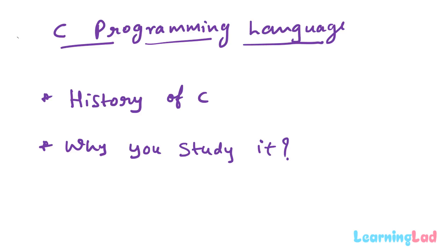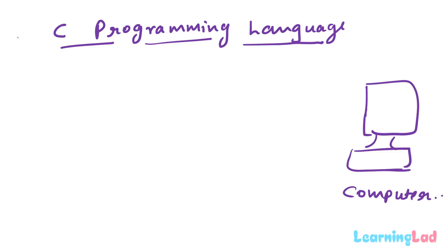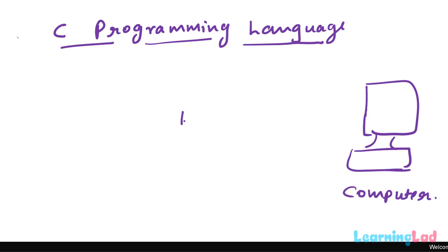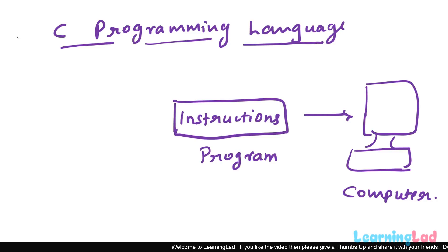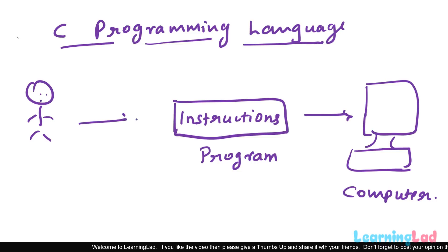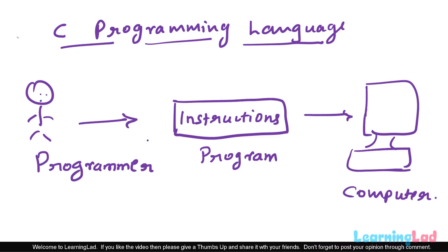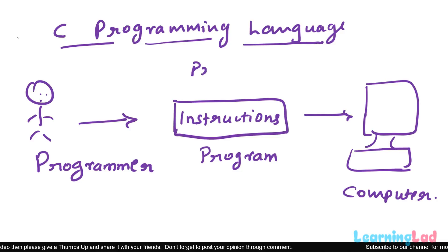First, let us see what is a programming language. We all know that a computer is a general purpose machine that can perform many computational tasks, but computers can't do anything on their own. To get something done we have to give instructions to the computer. These instructions given to the computer to get a particular job done are called a program, the person who writes them is called a programmer, and the language in which these programs are written is called a programming language.